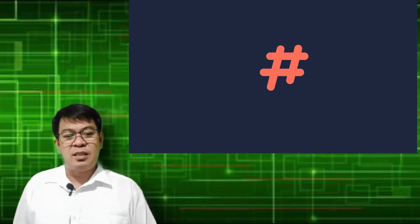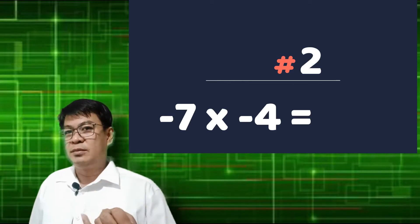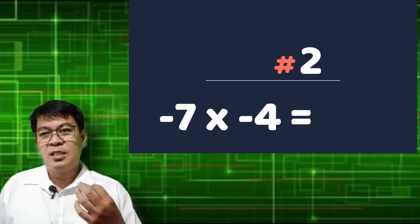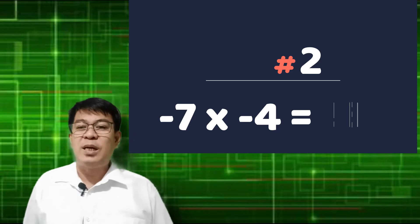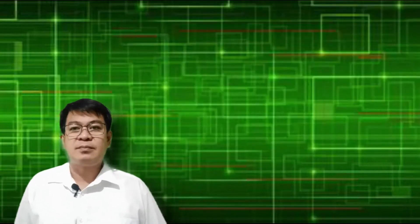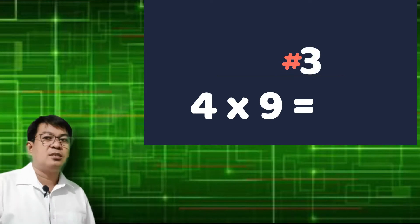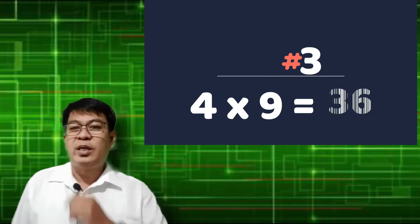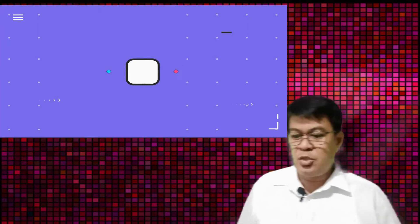Next one. Negative 7 times negative 4. What do you think is the answer? Three seconds. The answer is positive 28. And the next one: positive 4 times positive 9. The answer is positive 36. Now let's proceed with division of integers.